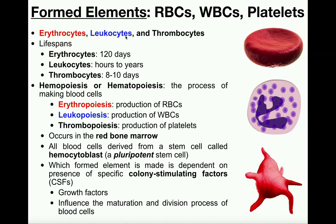Leukocytes function in immune protection — they're part of our immune system and defend against foreign pathogens. This is an example of a leukocyte right here. Leukocytes last anywhere from hours to years. The last formed element is a platelet or thrombocyte, one of which is shown right here. Thrombocytes function in initiating coagulation, or clotting. Platelets only last about eight to ten days.